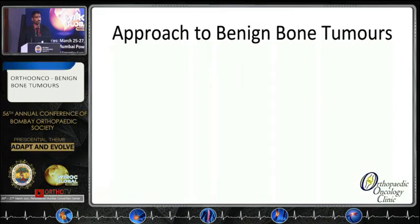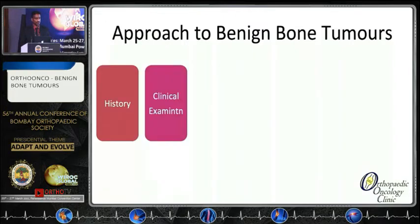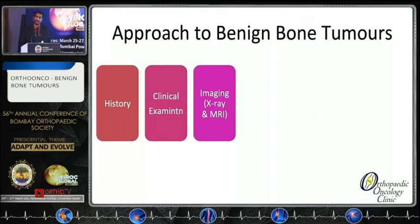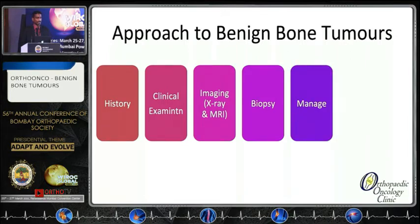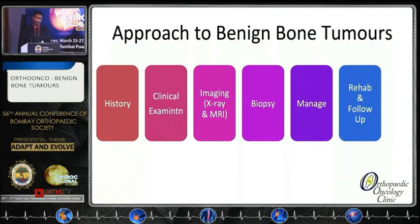How do we approach these tumors? We go by the history, clinical examination, then imaging. X-ray and MRI help us define the area. Very important in aggressive lesions — we need to classify them, get a biopsy done, then manage according to the histopathology that we get, and then rehabilitation and follow-up.